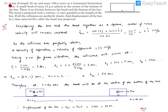Question number 20 says: a box of length 22 centimeters and mass 100 grams is placed on a horizontal frictionless floor. A small bead of mass 10 grams is placed at the center of the bottom of this box. There is no friction between the bead and the bottom of the box. The bead is projected with velocity 11 centimeters per second parallel to the length of the box. If all the collisions are perfectly elastic, we need to find the displacement of the box in a time interval of 60 seconds after the bead was projected.